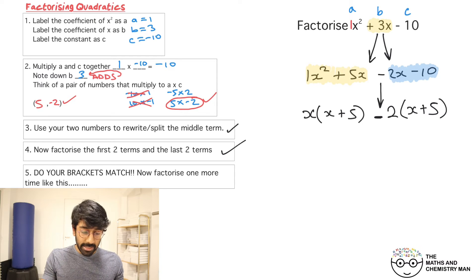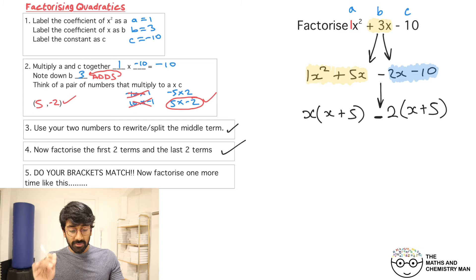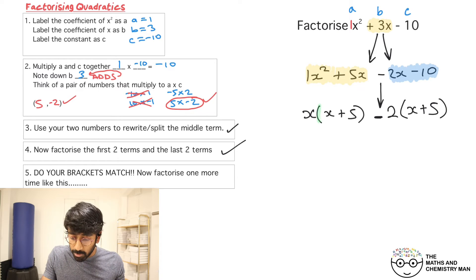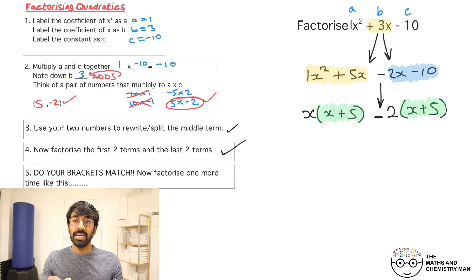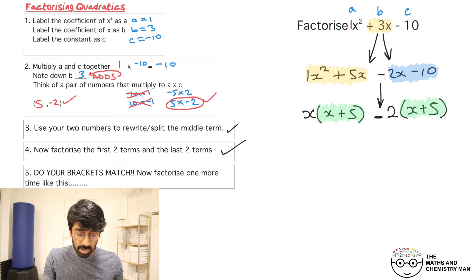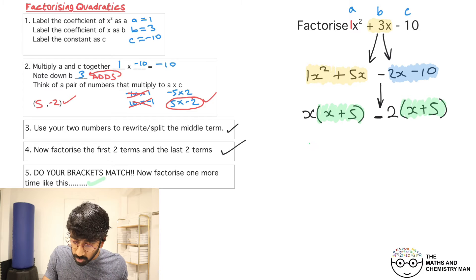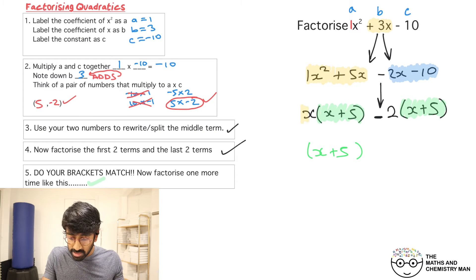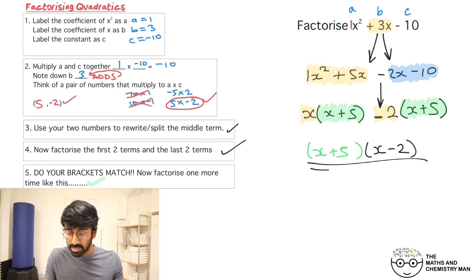Step five: do your brackets match? If you've done the method correctly, the brackets you have will match each other. If they don't match, you've done it wrong — go back and find your error. Our brackets match, so the things highlighted in green give your first bracket, and then x and minus 2 that are left over form your second bracket. Factorized: x plus 5 times x minus 2.